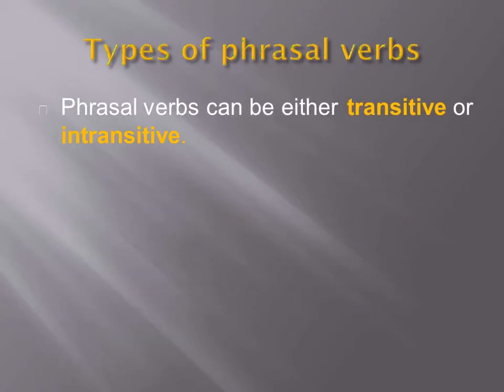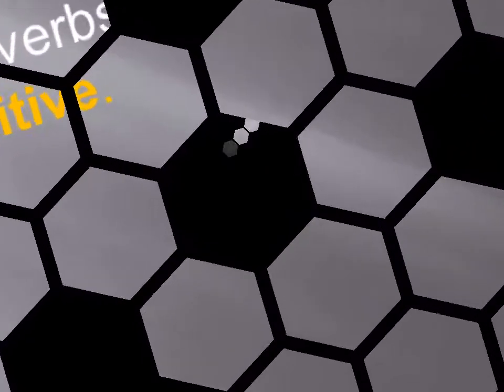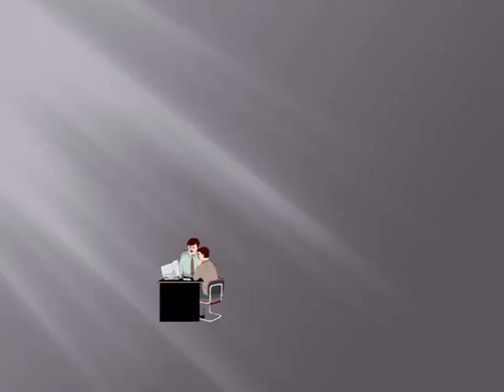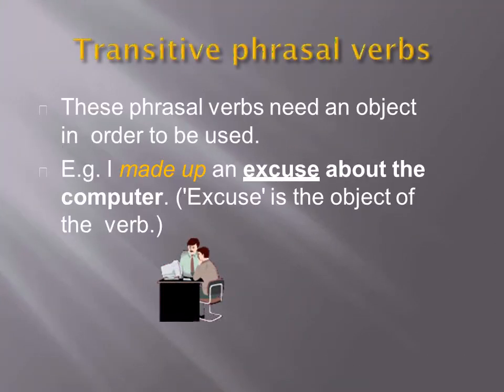Phrasal verbs can be either transitive or intransitive. Transitive phrasal verbs need an object in order to be used. For example: I made up an excuse about the computer. Here, 'excuse' is the object of the verb.